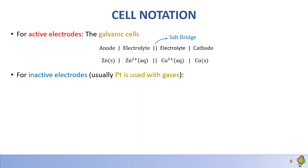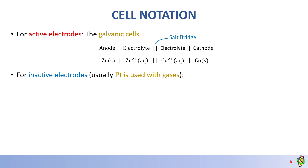For inactive electrodes, we usually use platinum or carbon electrodes. These are used when the electrodes are involved with gases or any aqueous-to-aqueous half reaction — for example, when Fe²⁺ becomes Fe³⁺ plus an electron. In this case, we use metals like Pt that won't react in the reaction. We represent the inert metal used on the first side of the cell notation.